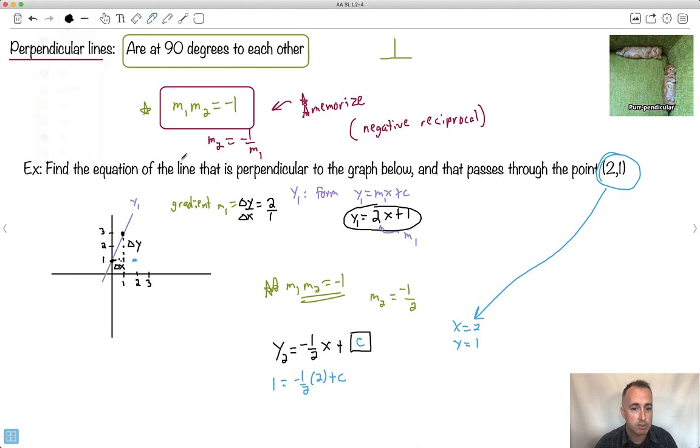Now, my 2s are going to cancel out, which is kind of nice. So, I have minus 1 plus c. So, c is going to be equal to, I'd say, 1. This minus 1 comes over here. So, 1 plus 1, which is just 2. So, because of that, then, I'm going to say, I know my whole equation. My new equation is y2 equals minus 1 half x, and I can say plus 2. Now, I'm finished. I'm done. I've solved it.